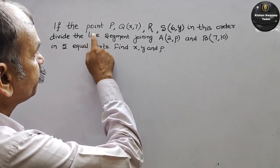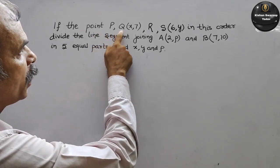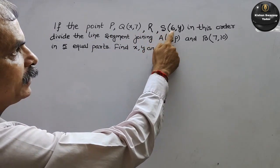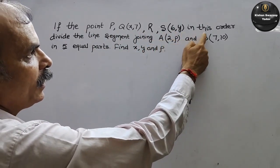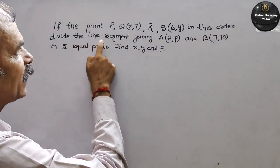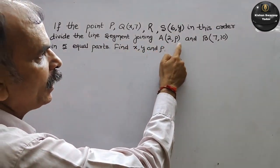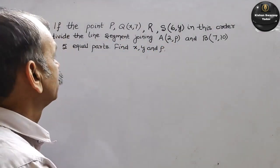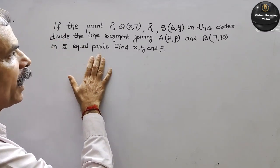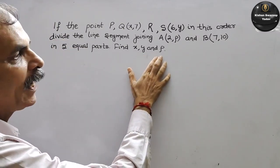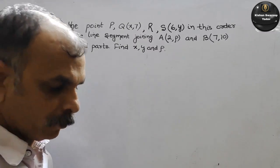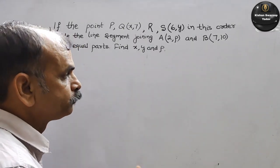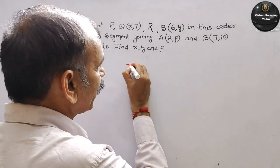Aapka question hai: if the points P, Q(x, 7), R, and S(6, y) in this order divide the line segment joining A(2, P) and B(7, 10) in 5 equal parts. So this is your line segment.